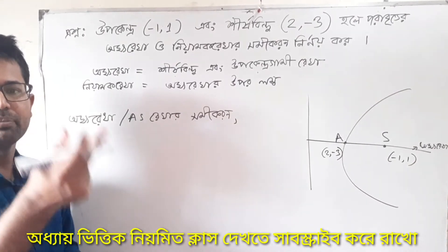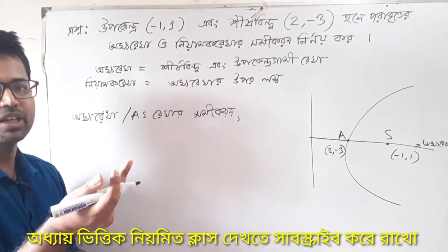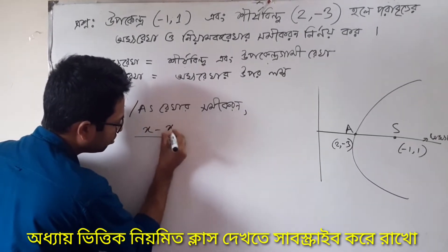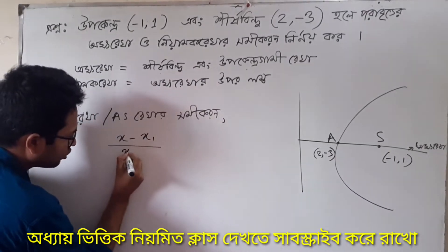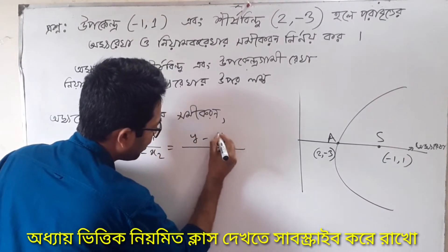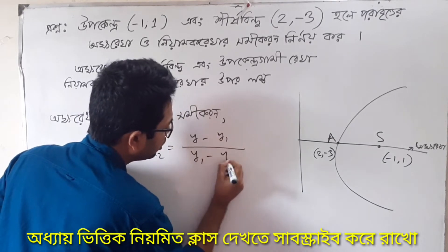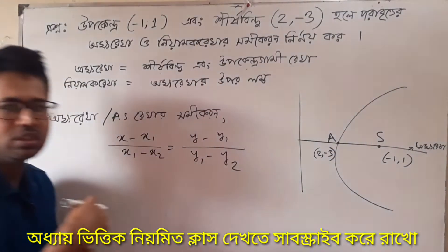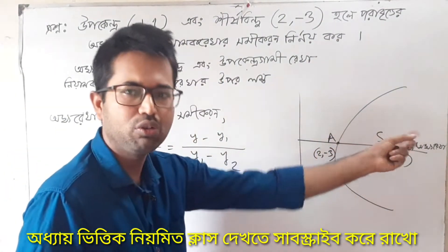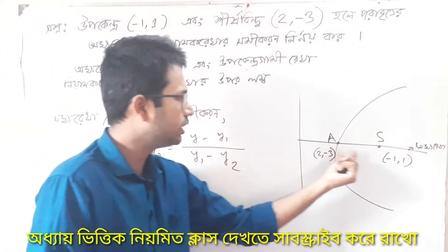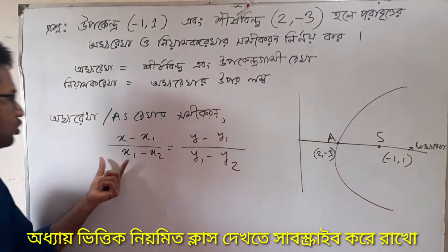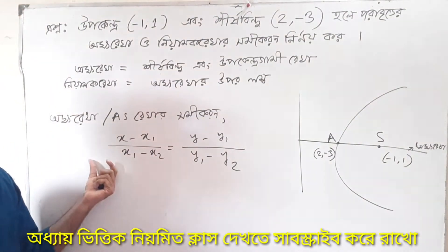x minus x1 by x1 minus x2, y minus y1 by y1 minus y2. So, we have this S. x minus x1 by x1 minus x2 equal y minus y1 by y1 minus y2. So, we have two different models. We have to know that we have to connect. We have to apply this S, so we have to know that.